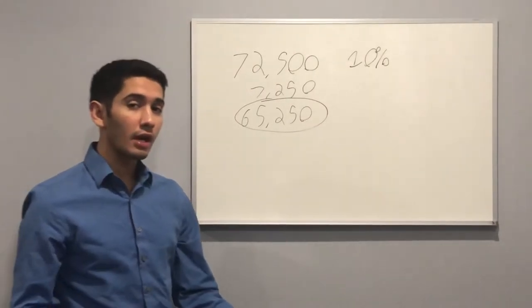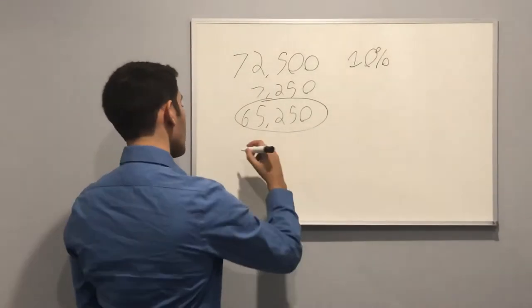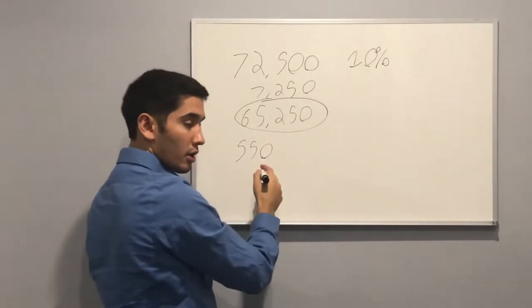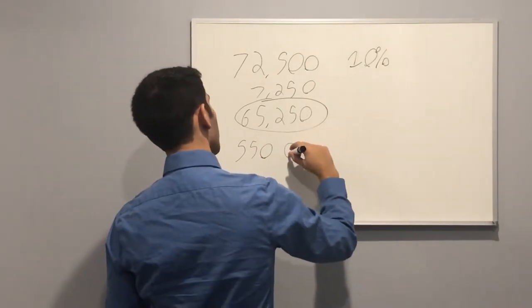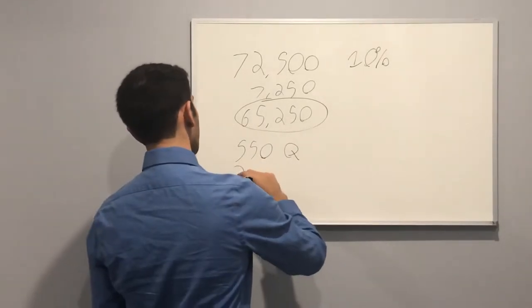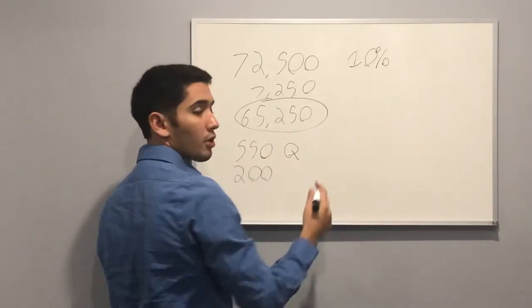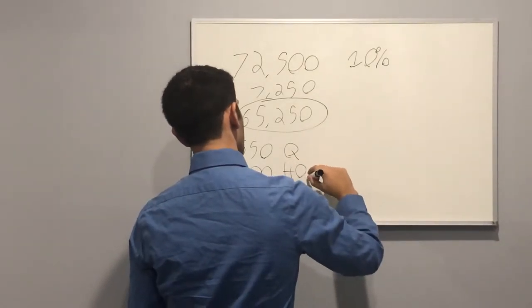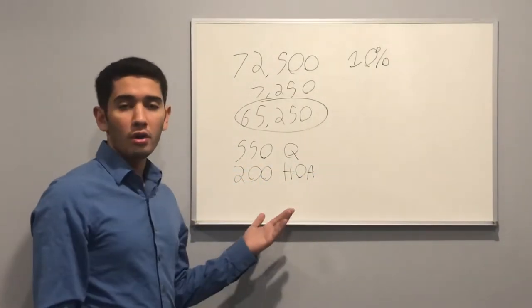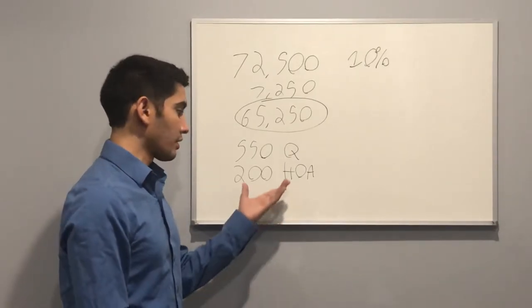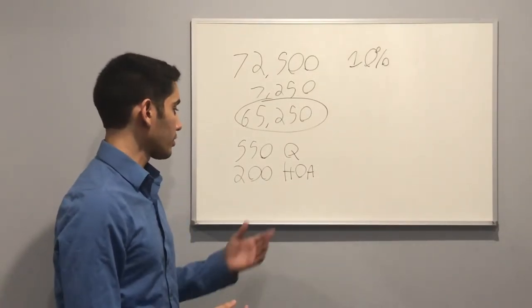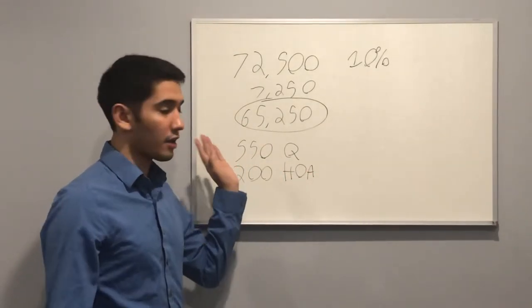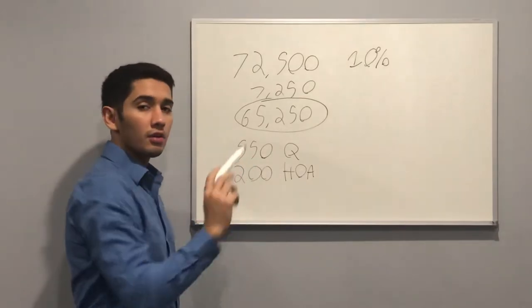What this number here looks like broken down into monthly payments is like this. You got $550 going to Quicken Loans. And now you got $200 going to HOAs which is Homeowners Association fees. Basically they pay for your water, security, lawn keep. They're like the upkeep of the condominium or apartment. So this never goes to principal or taxes or escrow, insurance, none of that. That's all this number here.